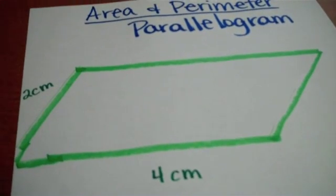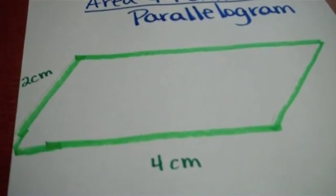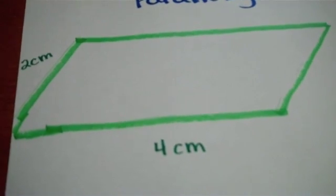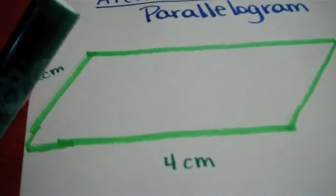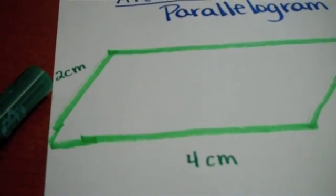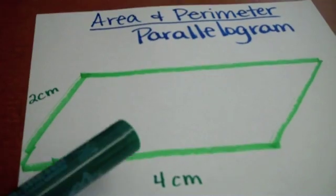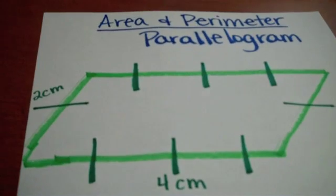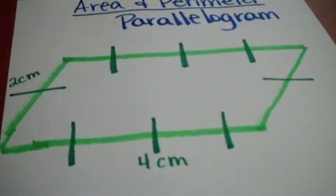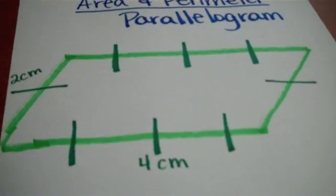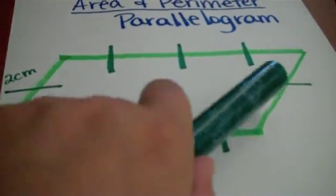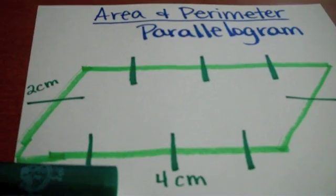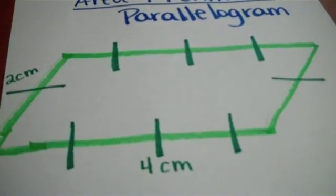The first thing a student needs to do to find the perimeter of a parallelogram is divide each side into the number of pieces that the number indicates. In this case, I'm going to divide it into two on this side and this side, and four on this side and this side. It's going to look like this when you're finished. Now, I've divided each of my four sides into the appropriate number of pieces. You can see that this one has two pieces and this one has two pieces, as this one has four pieces and this one has four pieces.